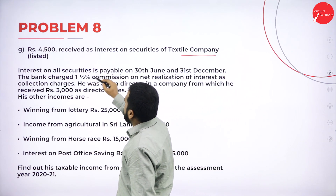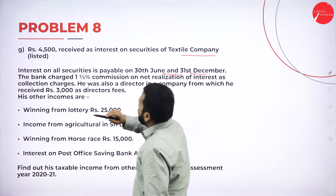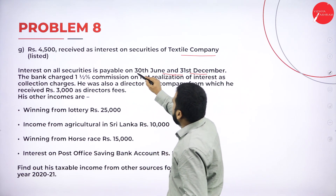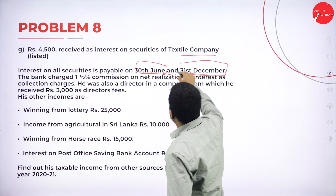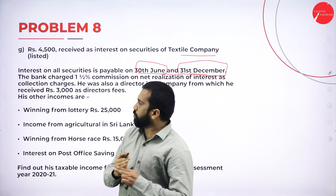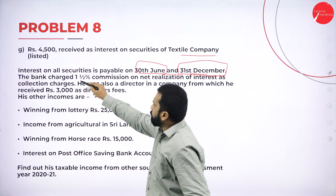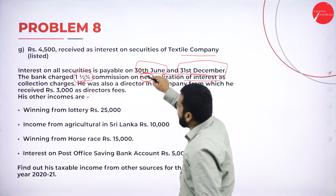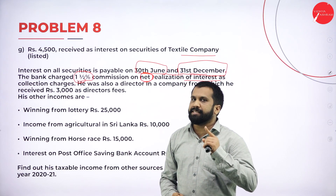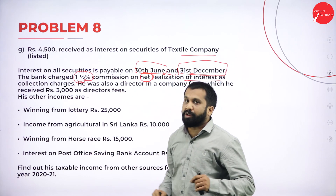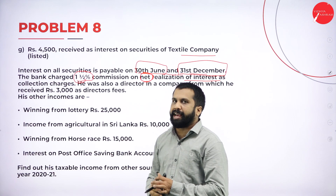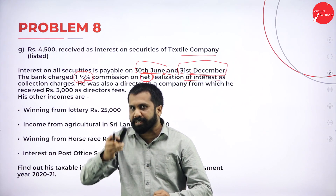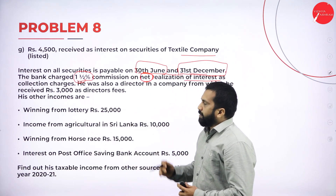Additionally, rupees 4,500 received as interest on security of Textile Company, listed. Interest on security is payable on 30th June and 31st December — that is, half-yearly on two dates. The bank charged one and a half percent commission on net realization of interest. So we need to minus this 1.5% commission. In this problem we will calculate both net and gross.